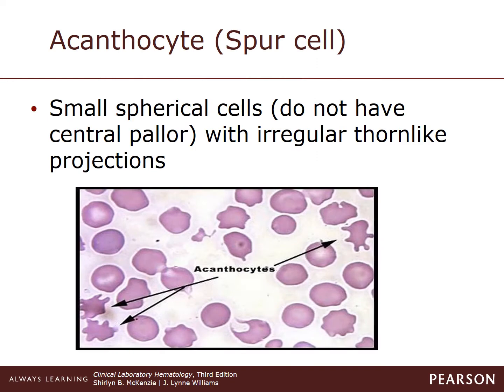Acanthocytes, also known as spur cells, are spherical cells that have irregular thorn-like projections, often with bulb-like tips. They do not usually have any central pallor. These cells have membranes with free cholesterol accumulating in the outer bilayer of the membrane, leading to decreased fluidity.